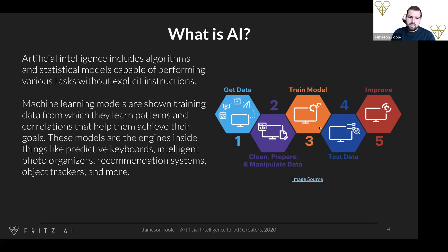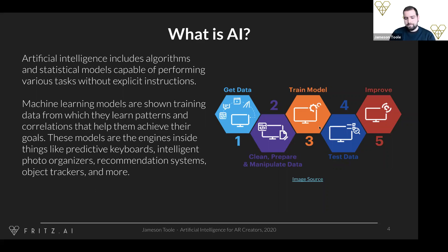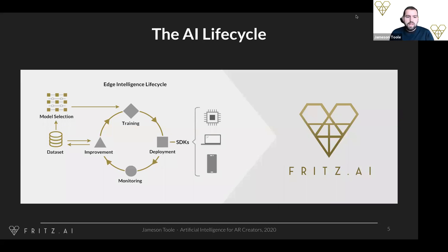The way most machine learning models work is by example — you show them a whole bunch of training data, the models then learn patterns and correlations in that data to help them achieve their tasks. These models form the engines behind features you use every day: predictive keyboards, photo organizers, recommender systems, object trackers, and background removers. If you want to do AI, you really have to take into account the entire lifecycle — selecting a model, collecting and labeling data, training the model, and deploying it to the device.